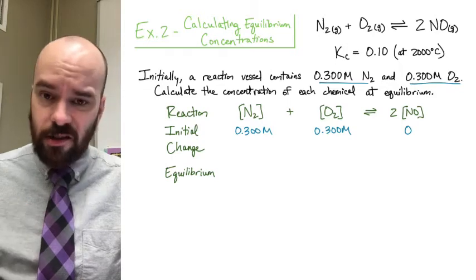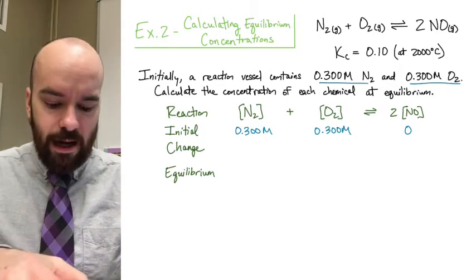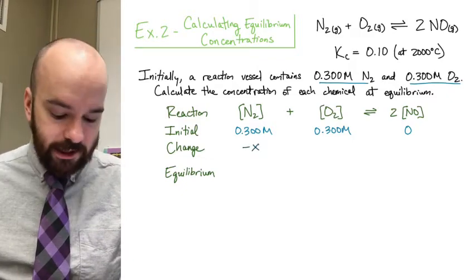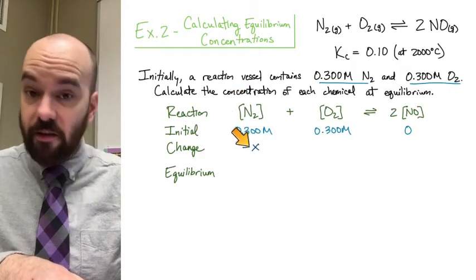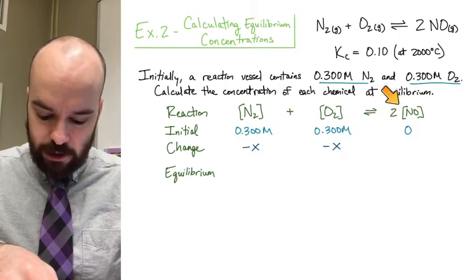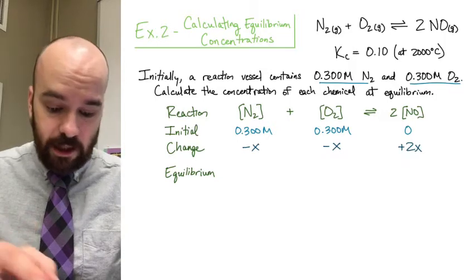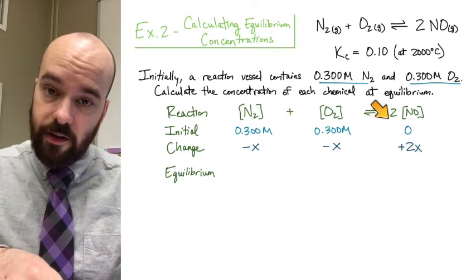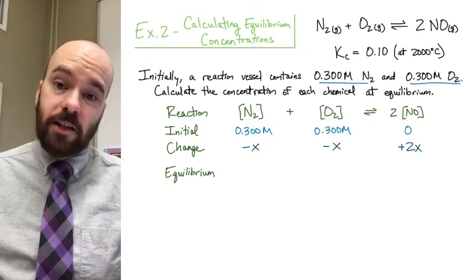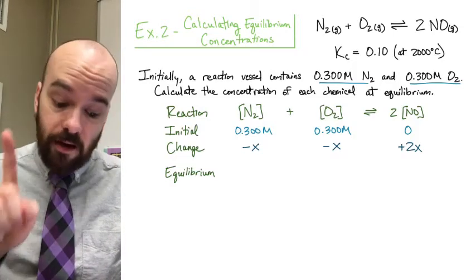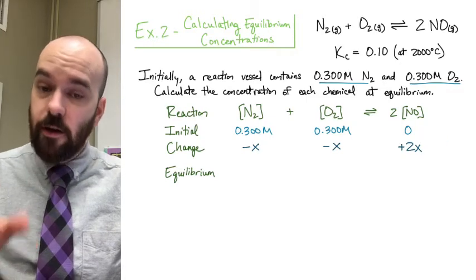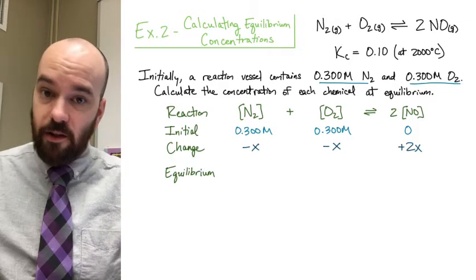Here's where we run into a problem: we don't know how much the concentrations change, and we don't know any equilibrium concentrations at all. In math, anytime you don't know a value, you use a variable — and that's what we do here. For the change row, we assign minus X to nitrogen and minus X to oxygen, since they're in a one-to-one ratio. For nitrogen monoxide the coefficient is two, so the change is plus 2X. The sign is positive because consuming reactants produces products on the other side.